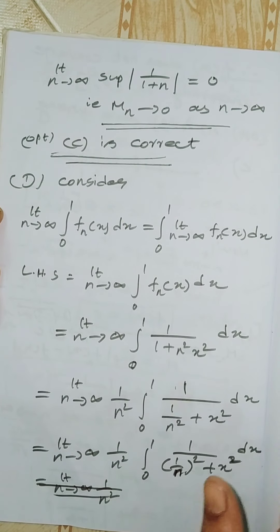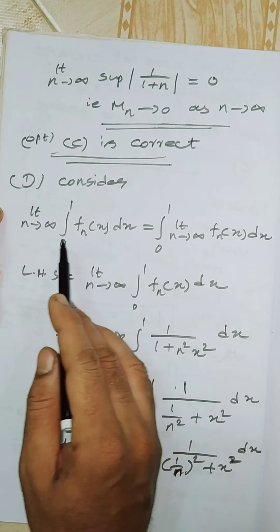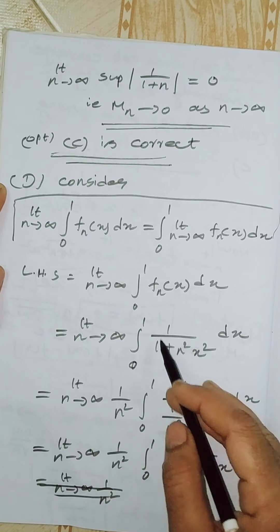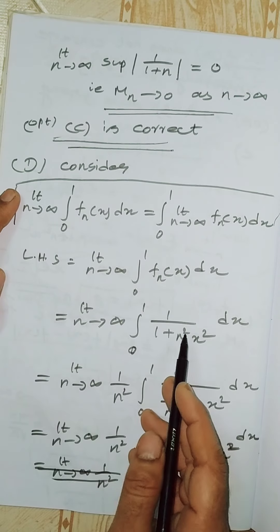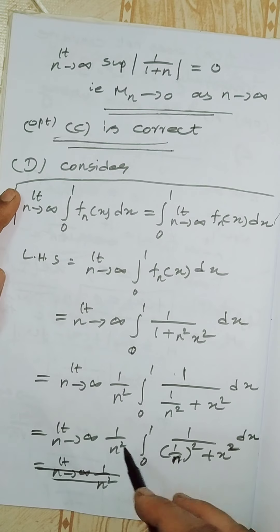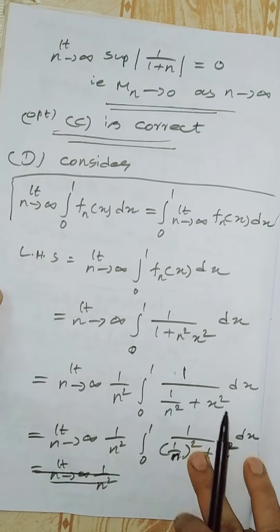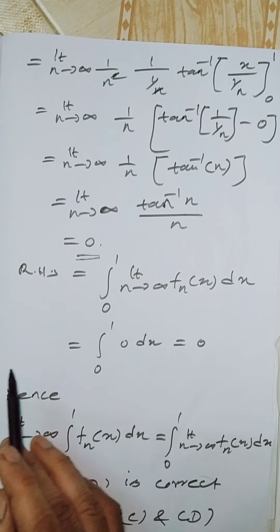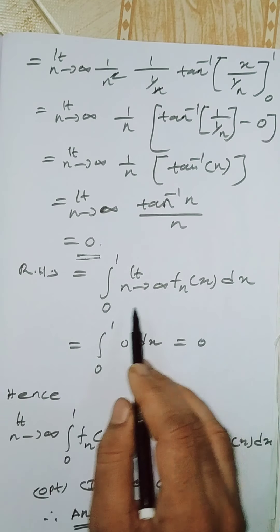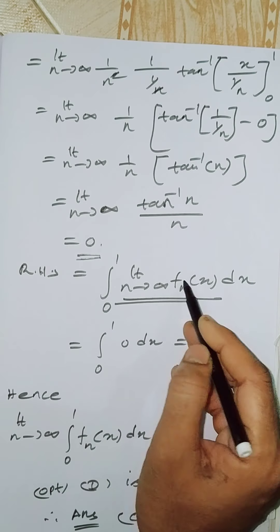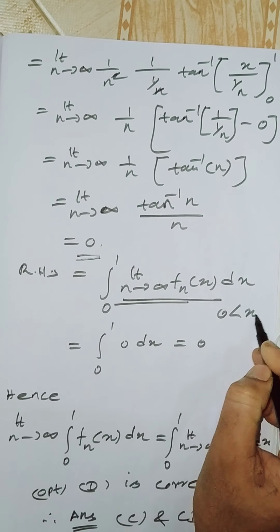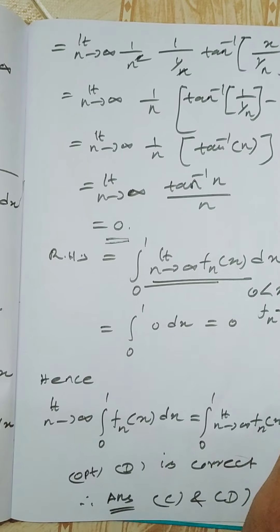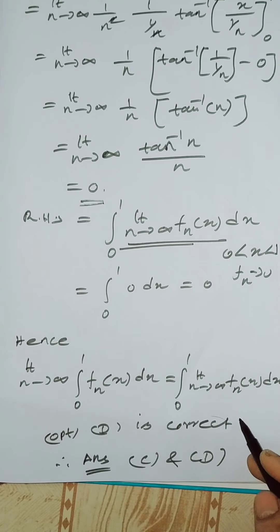For option D: we need to check whether the limit as n tends to infinity of the integral from 0 to 1 of fn(x) dx equals the integral from 0 to 1 of the limit as n tends to infinity of fn(x) dx. We compute the LHS by substituting fn(x) and simplifying — using the standard formula, after simplification involving n squared, we get LHS equals 0. For the RHS, applying the limit in the interval where 0 less than x less than or equal to 1, the limit of fn(x) equals 0, so RHS equals 0 as well.